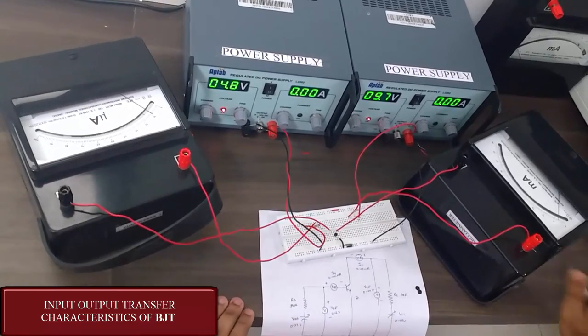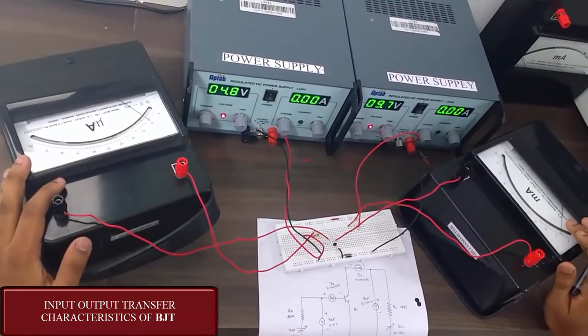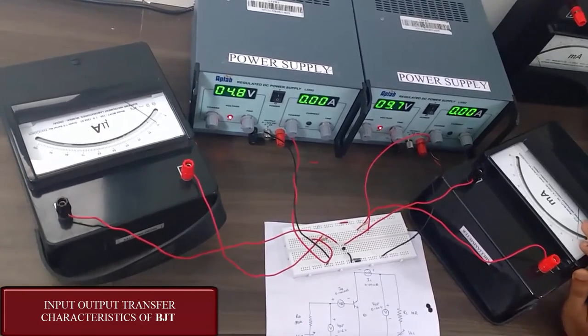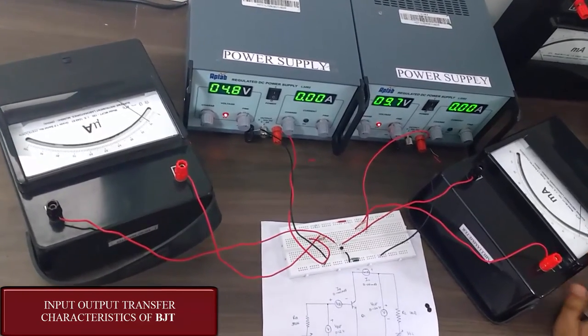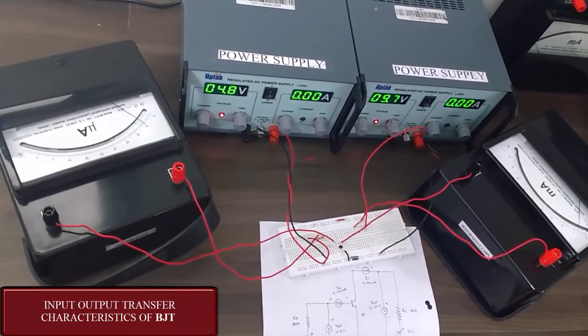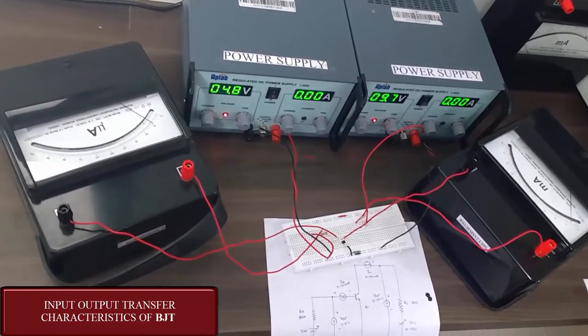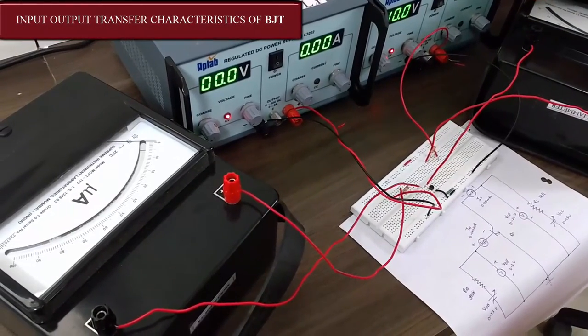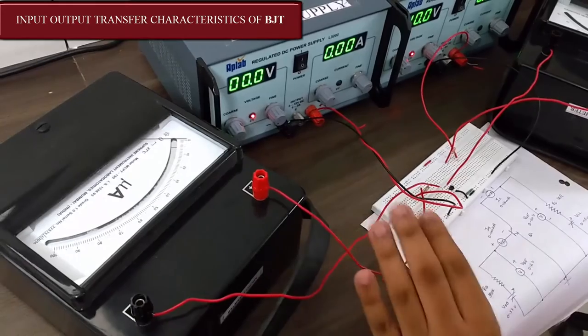We require one milliammeter and one microammeter. This microammeter gives us the input current whereas this milliammeter gives us the output current. The VCC is already set at 10V and VBB is set at 0V.